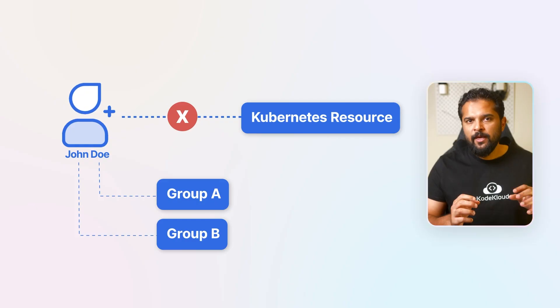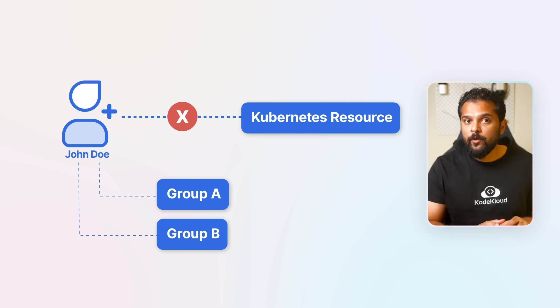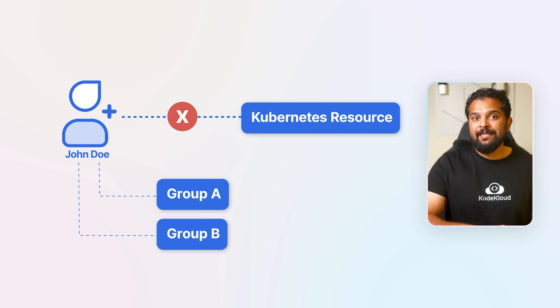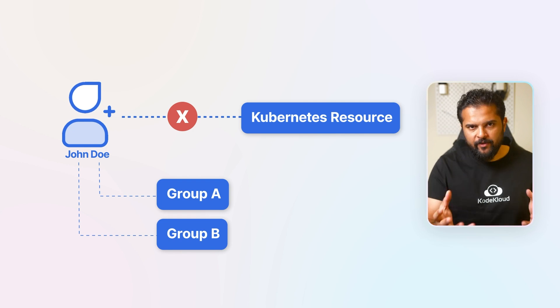Imagine you've got a Kubernetes cluster where users log in through a webhook token, and this webhook adds certain groups to the user based on their roles in the organization. Let's say John, one of the users, is trying to figure out why he can't access a particular resource in the cluster. He knows that his access depends on the groups he's part of, but he's not sure which group the webhook has assigned him to. Before the self-subject review API, John would have to dig through webhook or audit logs, or ask the cluster administrator to find out which group he belongs to.